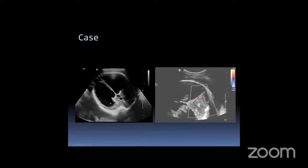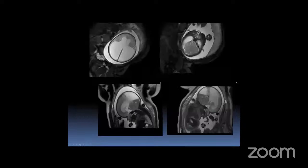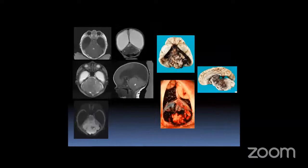We diagnosed this as a posterior fossa teratoma. After birth, postnatal MRI confirmed the posterior fossa mass with areas of hemorrhage and restricted diffusion. Unfortunately this baby passed away, and pathology showed a large mass invading into the cerebellum and midbrain — this was a medulloblastoma. Another case at 28 weeks: hydrocephalus with heterogeneity in the choroid plexus and echogenic ventricular walls. MRI showed the ventriculomegaly and on T1-weighted images confirmed blood within the ventricle, caused by neonatal alloimmune thrombocytopenia.